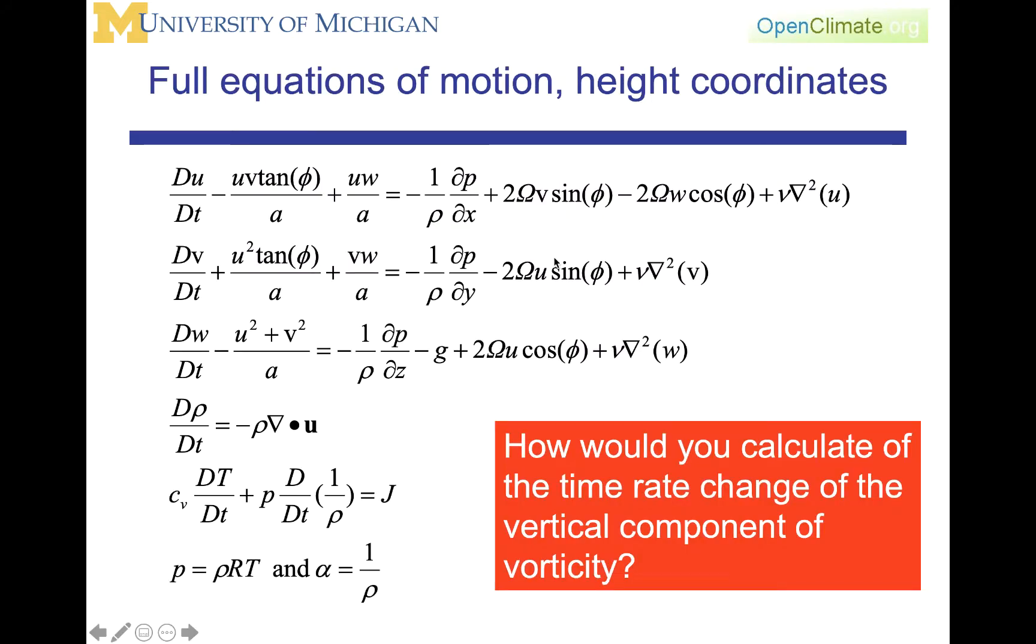We're going to do the same thing here, which is we're going to pick the appropriate equations, and then we are going to operate on them, and we're going to then combine them. And the equations we're going to pick are going to be the horizontal momentum equations. What we want to do is to calculate the time rate of change of the vertical component of vorticity. And in the previous lectures, we said that the vertical component of vorticity was going to be k dot del cross u.